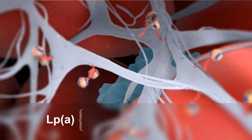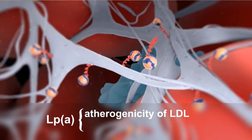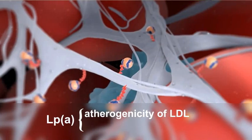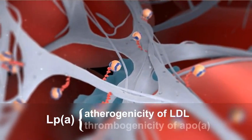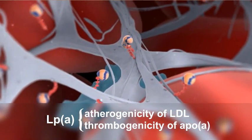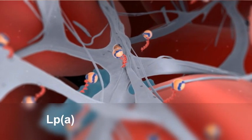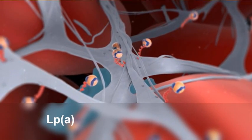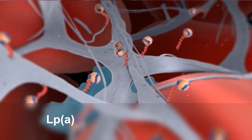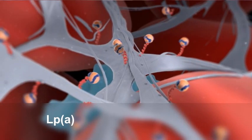Because of its unique structure, LP little A combines both the potential atherogenic risk associated with LDL particles and the potential thrombogenic risk attributed to APO little A. In addition, LP little A carries and deposits oxidized phospholipids, increasing inflammation.